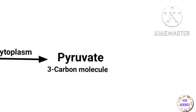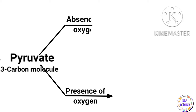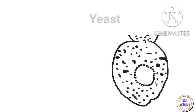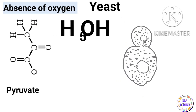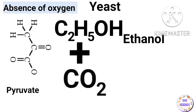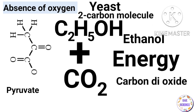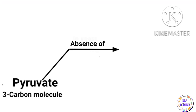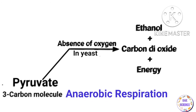The next steps of pyruvate breakdown depend on the presence or absence of oxygen. In yeast cells, in the absence of oxygen, pyruvate is converted into ethanol and carbon dioxide, along with the release of energy. This process takes place in the absence of oxygen, so it is called anaerobic respiration.